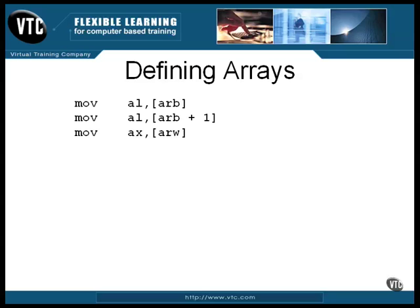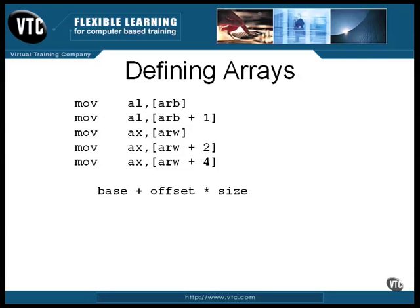In the same way, you can address the first member of an array of 16-bit numbers by using the address of the array. But to address the second member, you need to add two to the base address, because each member takes up two bytes. To address the third member, you add two more, giving an offset of four. In general, to address any member of the array, you calculate the address by multiplying the size of an array member by the zero-based index and adding that to the base address.